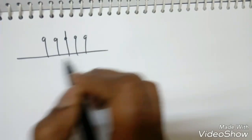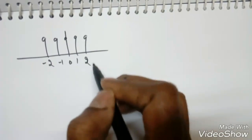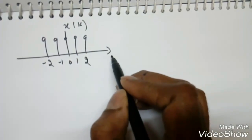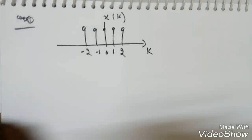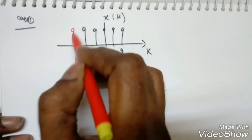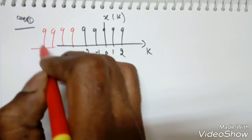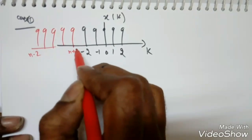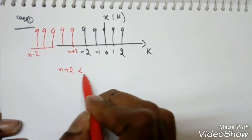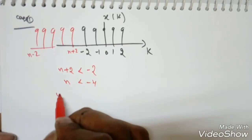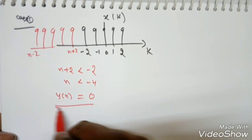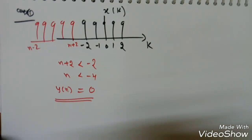Case 1: when n+2 < −2, i.e., n < −4, there is no overlap between x(k) and h(n−k), so y(n) = 0.